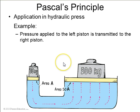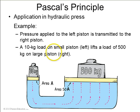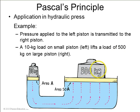That is how a hydraulic press can lift up a heavy car — a 10 kilogram load lifts a 500 kilogram load on the other large piston.